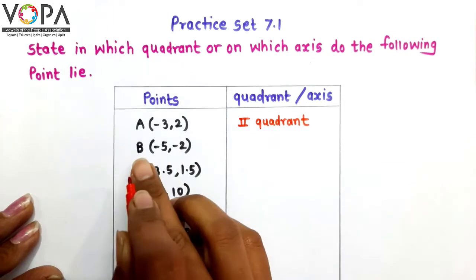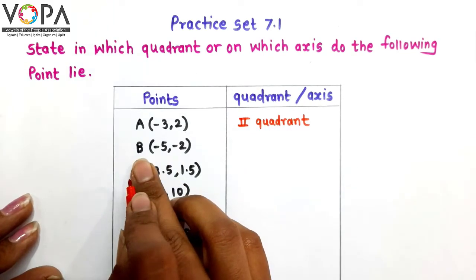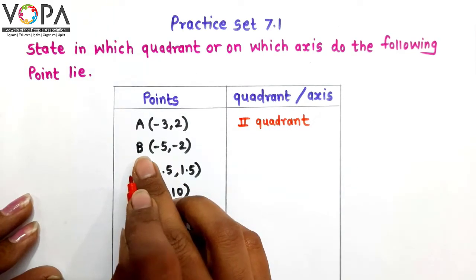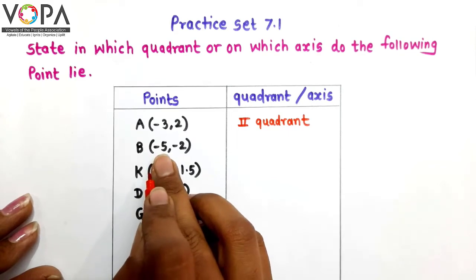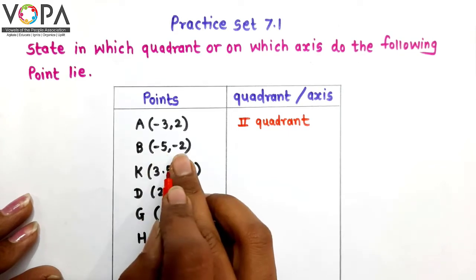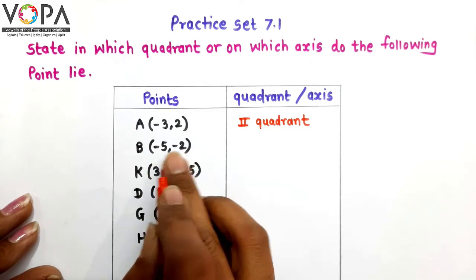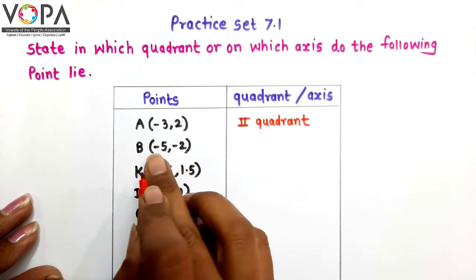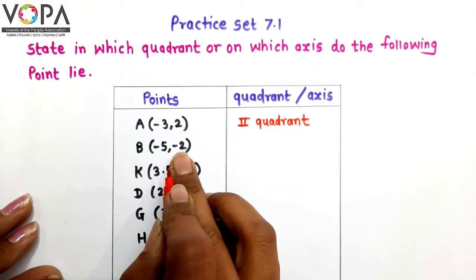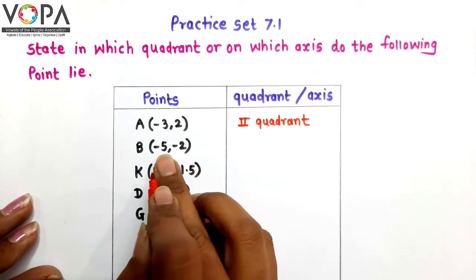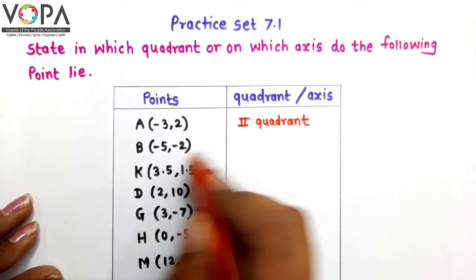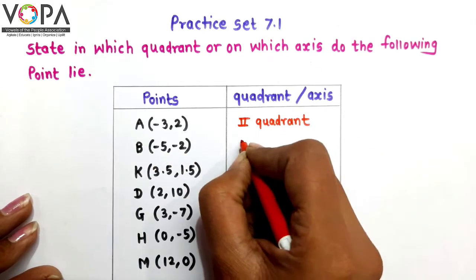Second point B. The coordinates of point B are minus 5, minus 2. Here both coordinates of point B are negative. Therefore B lies in the third quadrant.